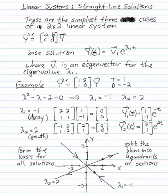Now in the simplest case in a linear system, this combination of eigenvector e to the eigenvalue t forms what's called a straight line solution. And there are three ways this can happen, and they form the three simplest cases of a 2 by 2 linear system.